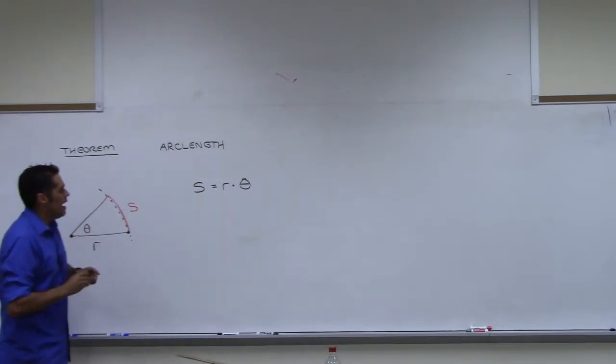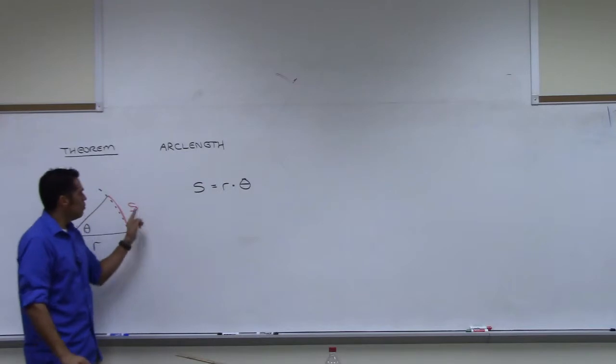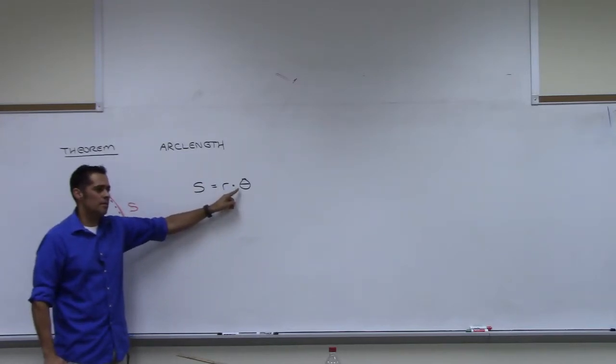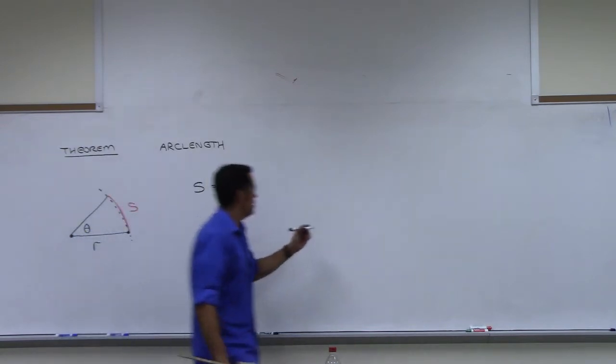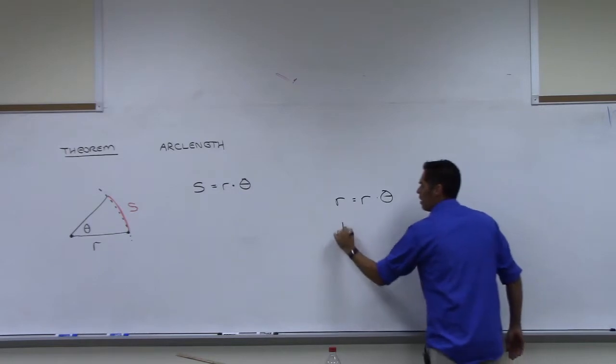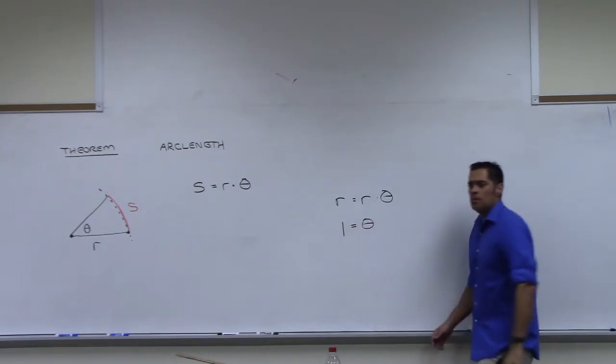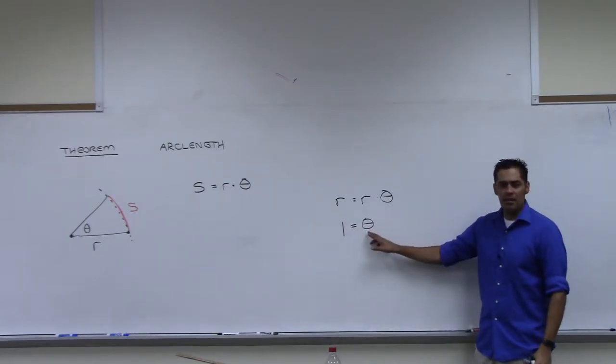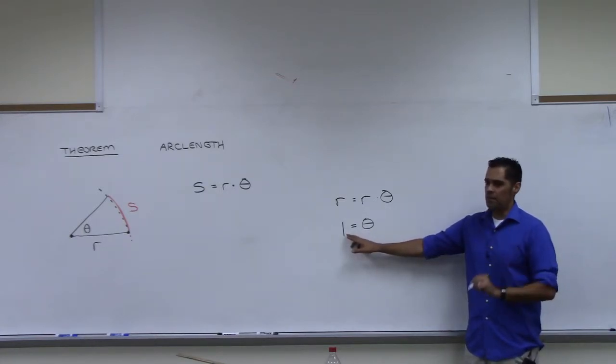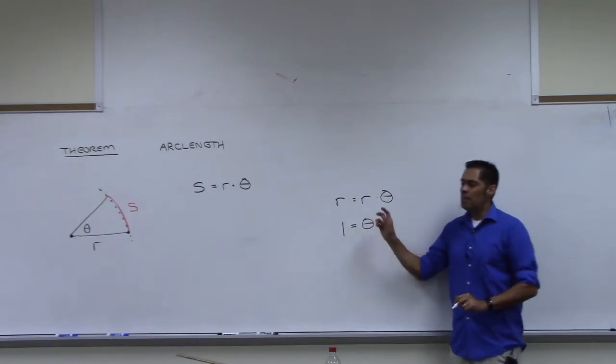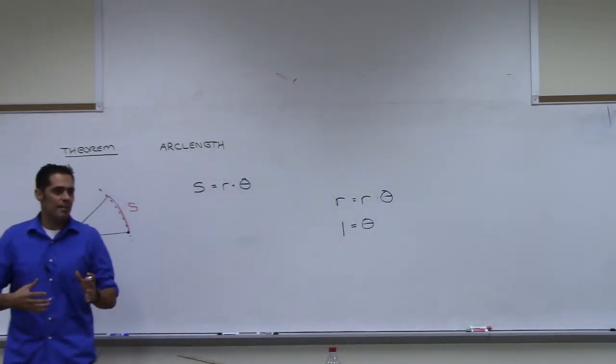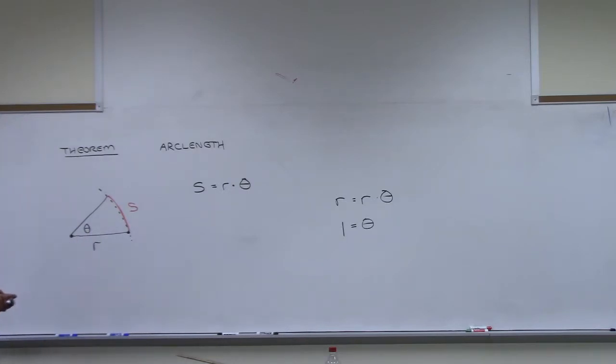In this formula, what would happen if the S here was R? You'd have R equals R theta. What could you do on both sides? Divide by R and you get 1 equals theta. So theta, the measurement of theta, is 1 radian. In the case that S is R, this gives you back that the angle must be 1 radian.